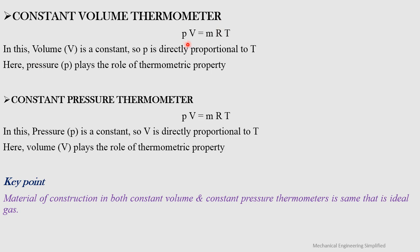Another device is the constant volume thermometer. Using the ideal gas equation PV = mRT, if volume V is constant and m and R are constant, then pressure P is directly proportional to temperature T — so pressure acts as the thermometric property. In a constant pressure thermometer, pressure is constant, so volume V is directly proportional to T, and volume acts as the thermometric property.